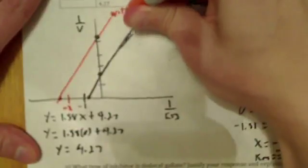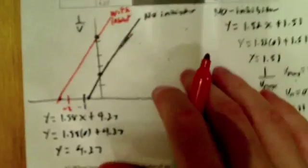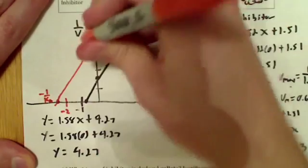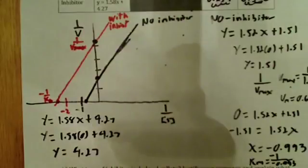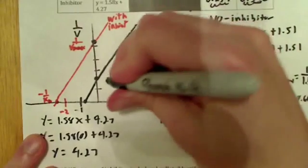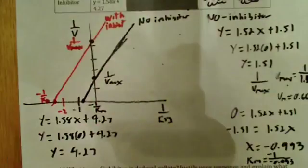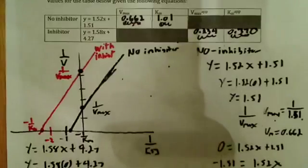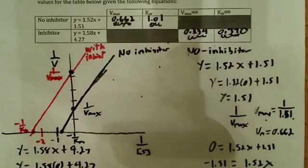And remember, this is negative 1 over Km and this is 1 over Vmax. So we can label the points on the graph. 1 over Vmax, negative 1 over Km. There we go. Now everything is labeled on the graph and we're pretty much all done with this. That's all we had to do. We had to fill in the table here and we had to draw the graph.